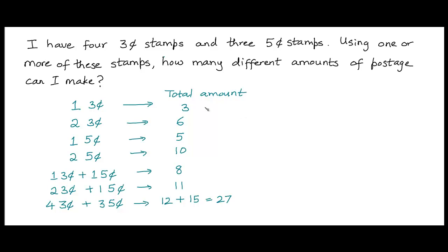Notice that we are getting different amounts for the postage for these different combinations. So how many such different amounts of postage can I make in total? We have enumerated some of the possibilities here, but we need to enumerate all the possibilities systematically.